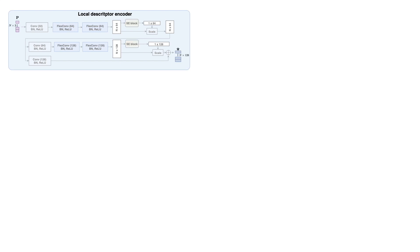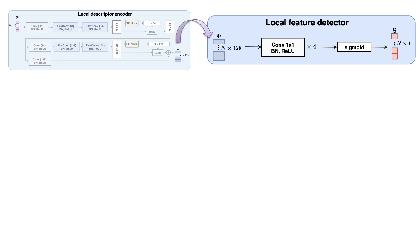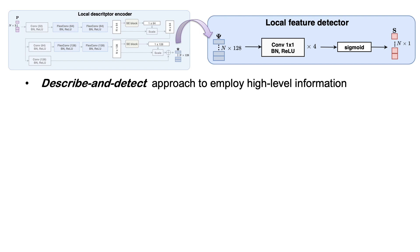In our method, keypoint selection comes after descriptor extraction. The detector consumes the point-wise local features. After a series of four one-by-one convolution layers and a sigmoid activation, it outputs a keypoint saliency map. This describe-and-detect approach is helpful for the detector to employ high-level information to learn the discriminativeness of the features.